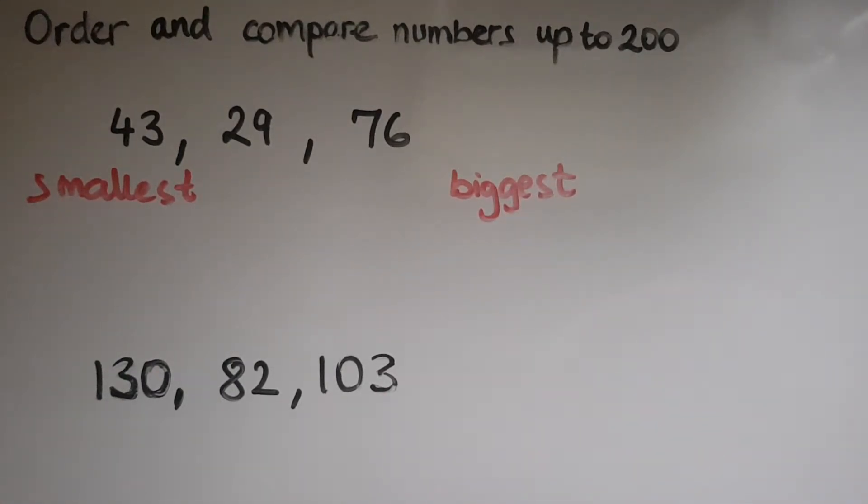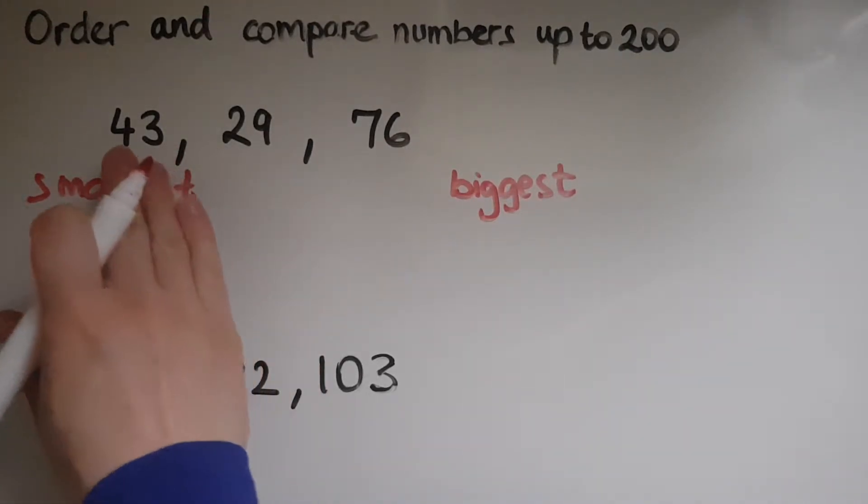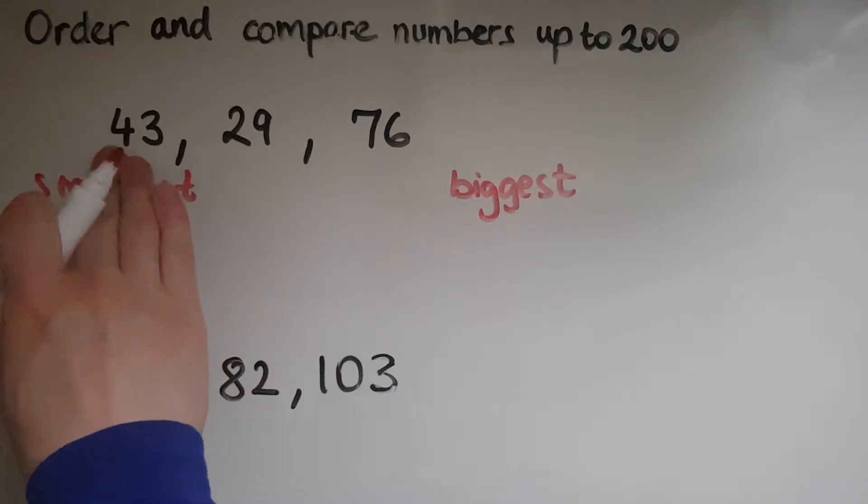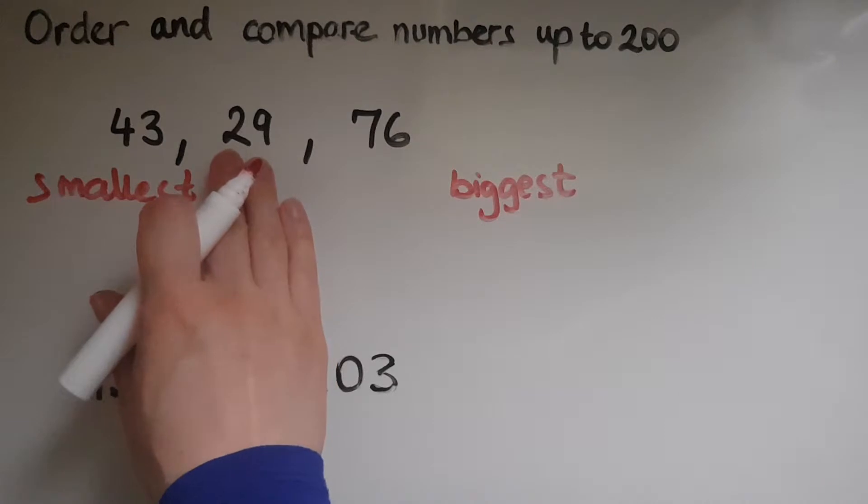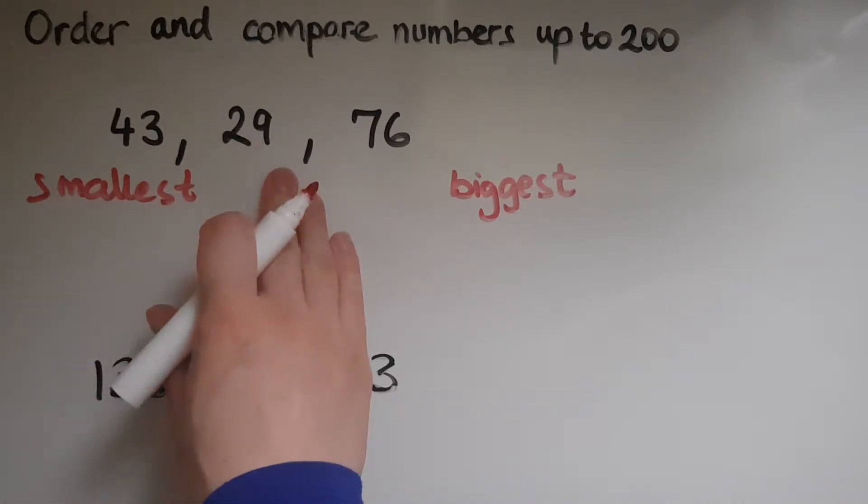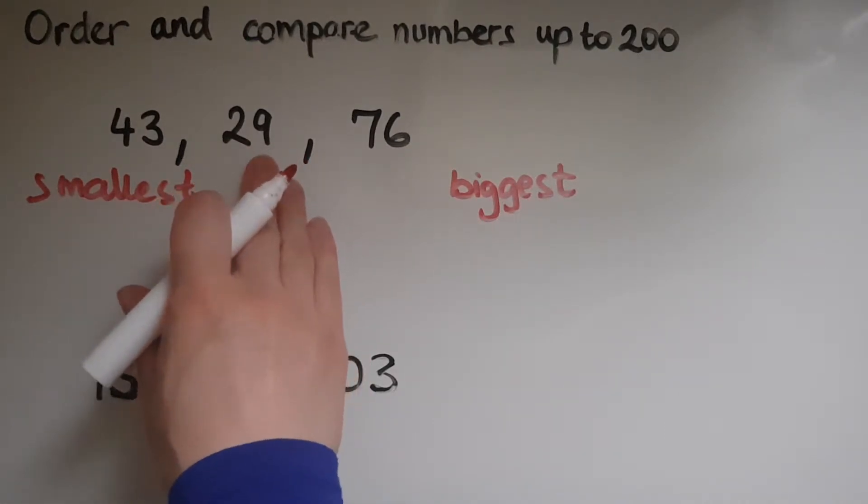Which one is the smallest? If I look at these numbers, I've got 43, which is 4 tens and 3 units, so 43, 29, so 2 tens and 9 units,